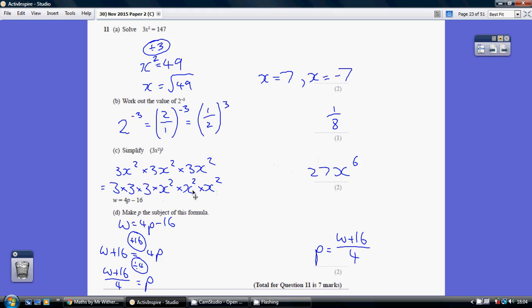And remember the index rules when you're multiplying you add the powers. 2 add 2 add 2 is 6. 27x to the 6.